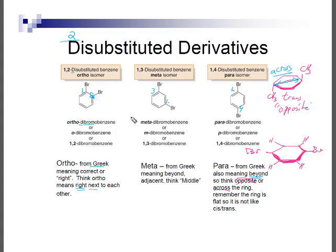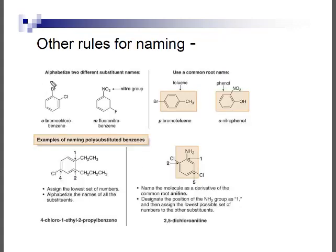For naming, always alphabetize substituents. Using the ortho-meta-para system, you don't need to worry about numbering — just say ortho or para; don't combine both systems at once. For IUPAC numbering: B comes before C, so bromo comes before chloro. You want the lowest set of numbers, meaning numbers should be ascending if possible. For example, 1-bromo-2-chlorobenzene is correct; 2-bromo-1-chlorobenzene is incorrect because the numbers are not ascending for the alphabetical order.